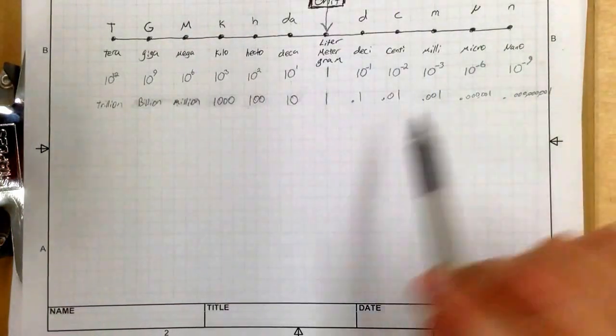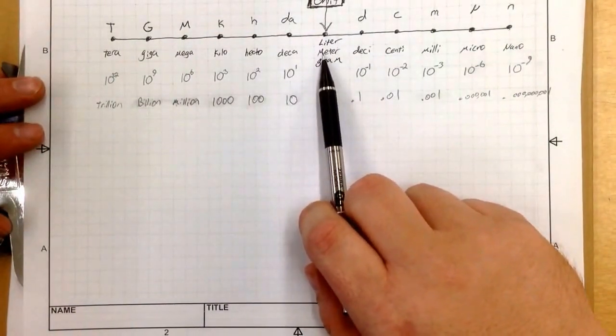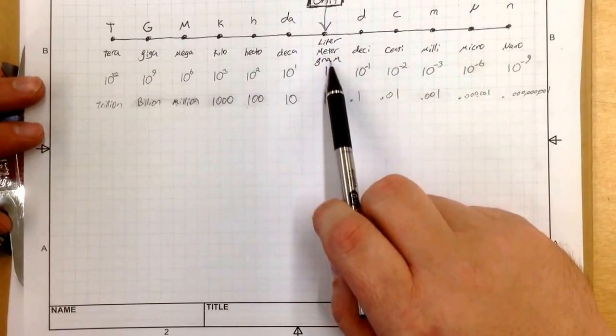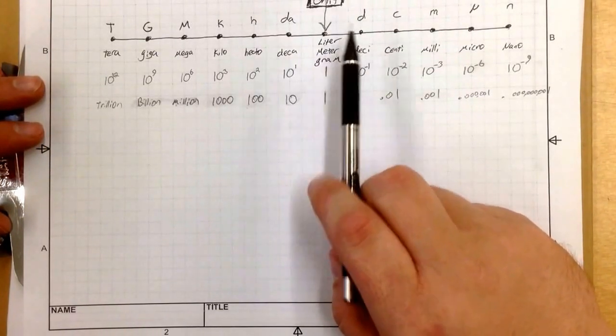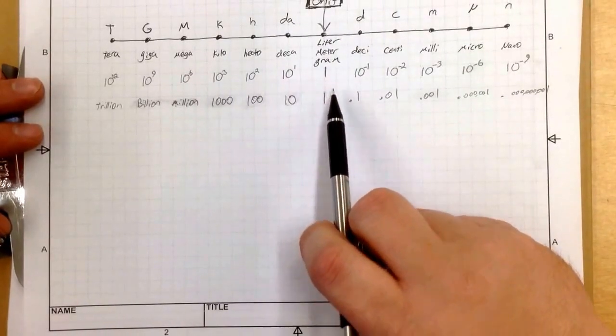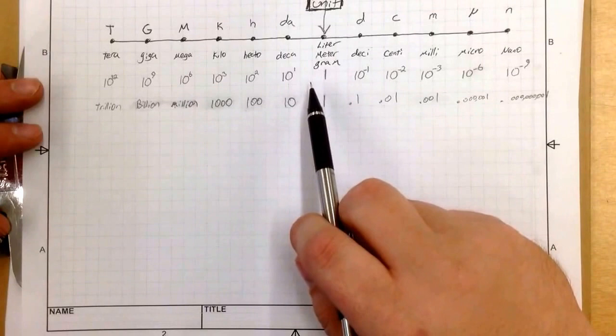Okay, now let's check this out. Right in the middle here, this has got our base unit. Now the base unit could be a liter, could be a meter, could be a gram, could be a byte, anything which is equivalent to one. Most of the time it's going to be liter, meter, or gram.